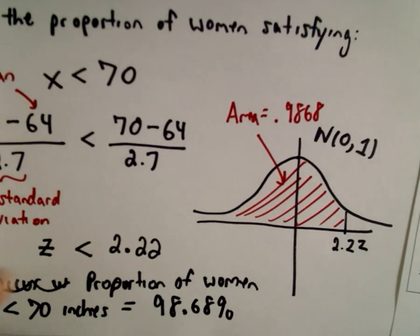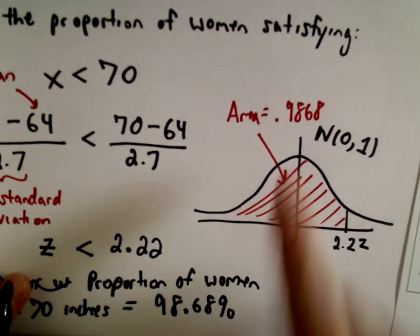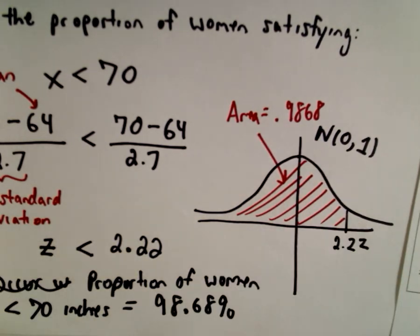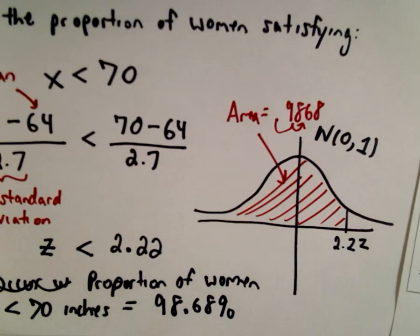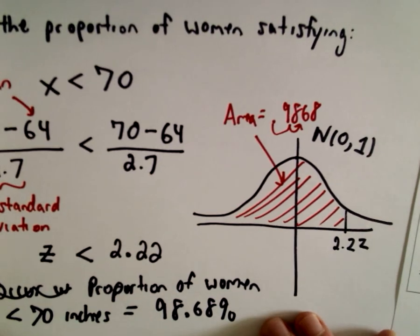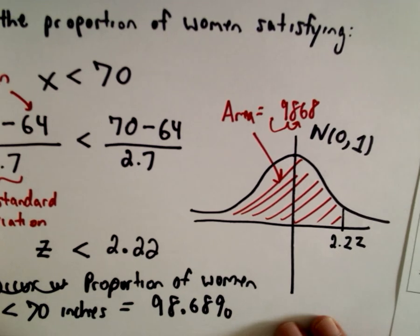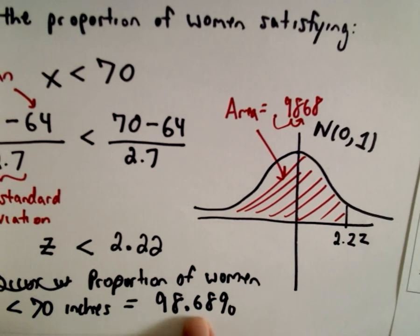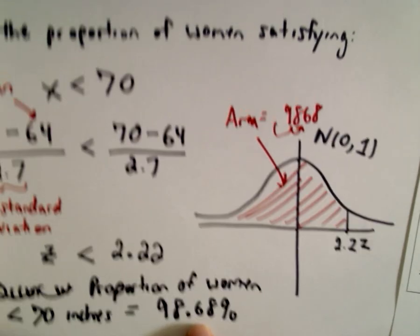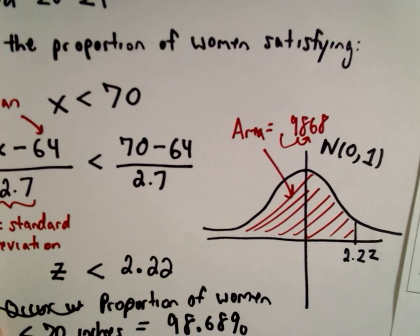I'm just converting my decimal, 0.9868, into a percentage, and I'm doing that by moving the decimal place two places to the right. According to our original data and our normalized z-score, 98.68% of women are going to be less than 70 inches tall.